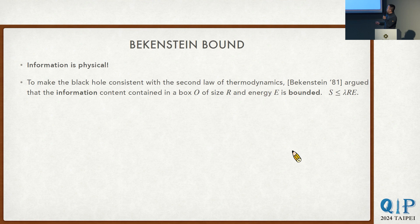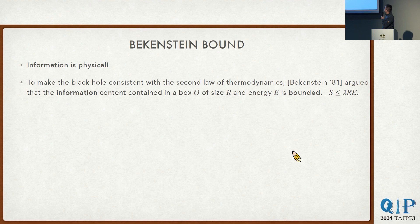Bekenstein famously argued that black holes must have entropy, and in this work in the 80s, he went one step further, saying that if you want to keep the second law of thermodynamics for the whole universe, whatever you dump into a black hole must not be too entropic. Otherwise, you could violate the second law. He figured that whatever matter is in a box of size R with energy E must have entropy upper bounded by the product R times E, up to some order-one factor.